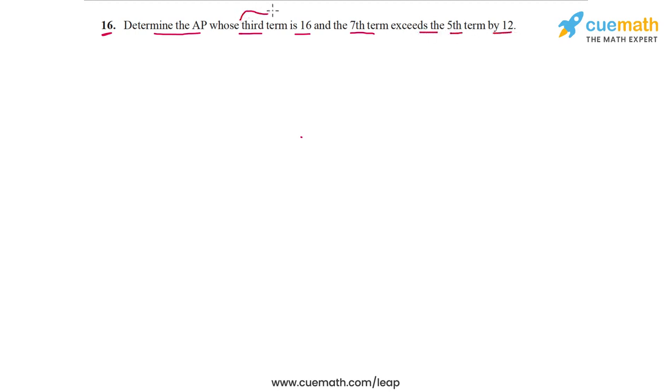We are given one specific term of the AP, which is the third term equal to 16, and we are told that the seventh term is 12 more than the fifth term. Using this information, we have to determine the AP, which means we have to determine the first term as well as the common difference, and hence the first few terms of the AP.